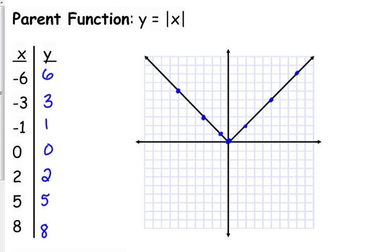The absolute value function is symmetrical. If you cut straight down through the vertex, the left side is a mirror image of the right side every single time.